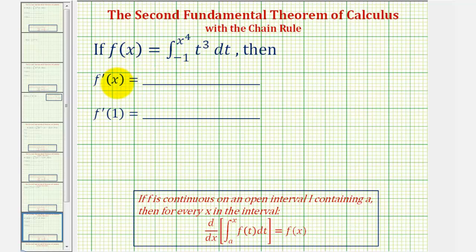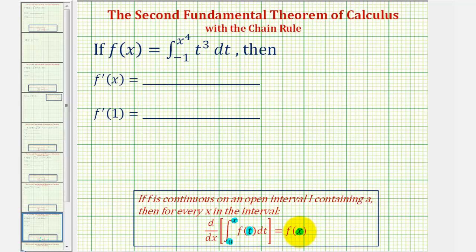We can also find f prime of x by using the second fundamental theorem of calculus. Where if f is continuous on an open interval containing a constant a, then for every x in the interval, the derivative with respect to x of the integral of f of t from a to x equals f of x. The lower limit of integration is our constant a, the upper limit is just x, the same variable in which we differentiate with respect to. To find the derivative of this integral, we substitute x for t, giving us f of x.